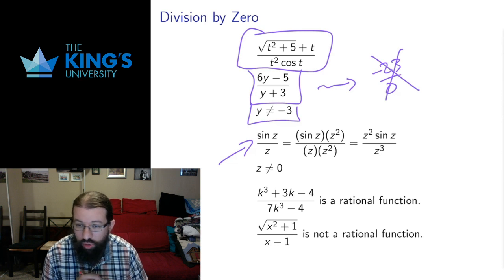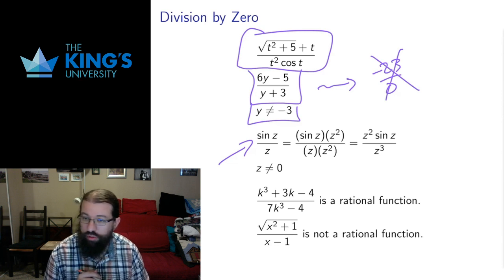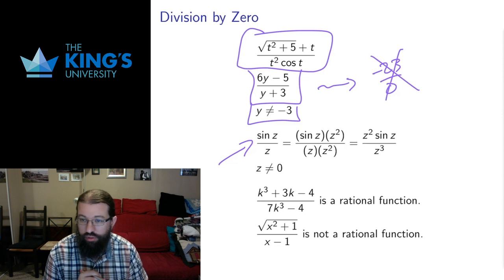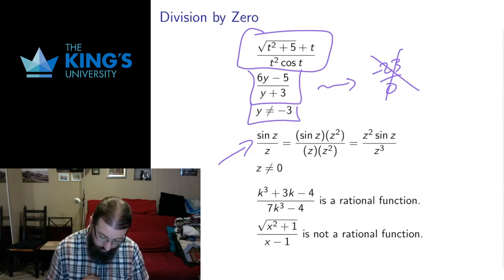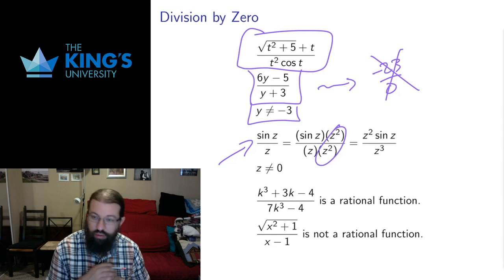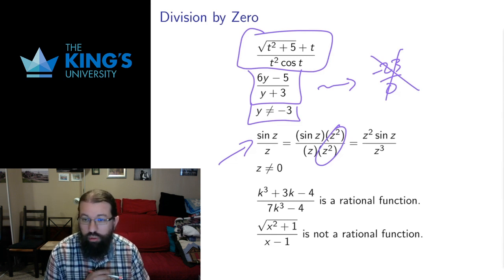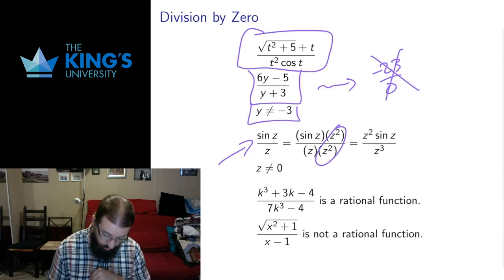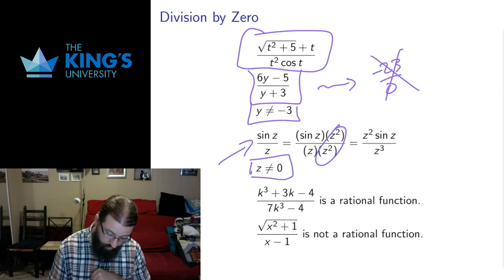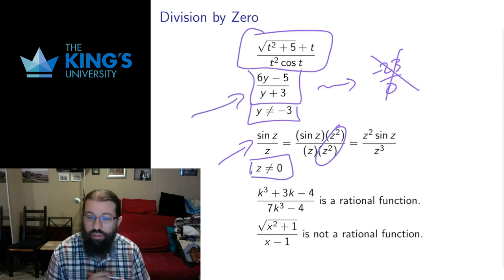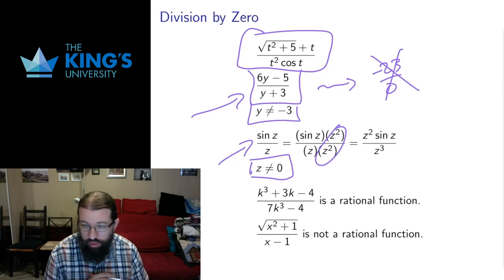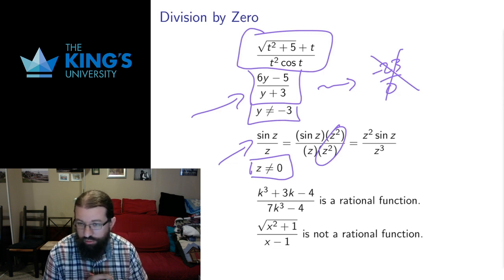For example, sine z over z — I can multiply numerator and denominator by z squared, giving z squared sine z over z cubed. The only thing I have to be careful about is not multiplying numerator and denominator by zero, because that makes everything undefined. So whenever I'm doing this, I need to make sure I'm not multiplying numerator and denominator by something that evaluates to zero.